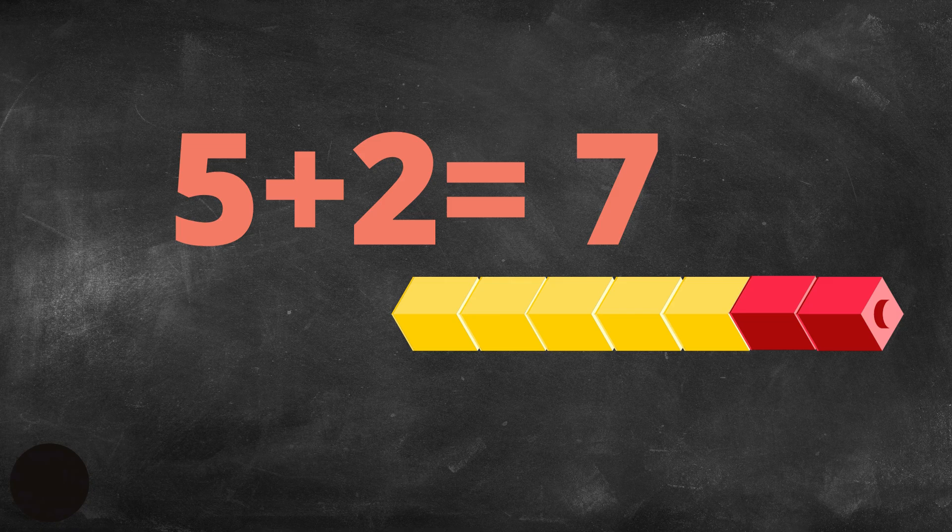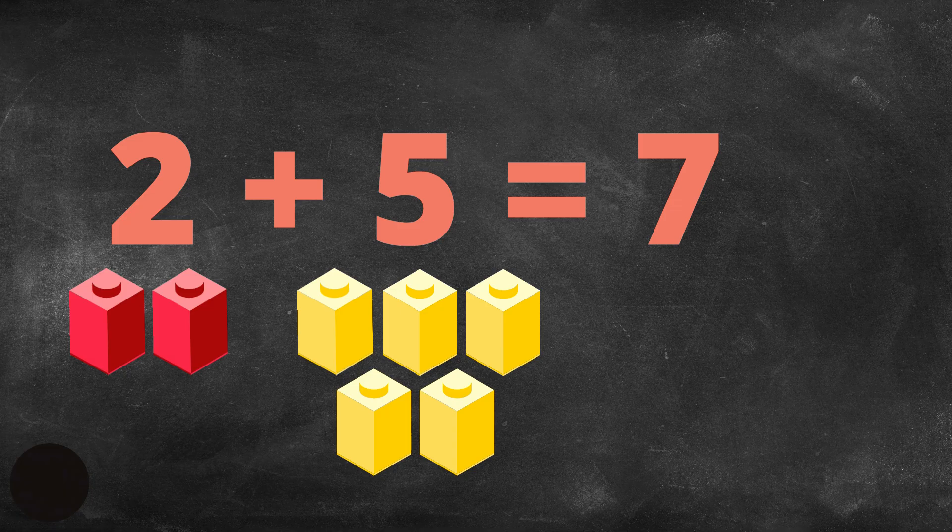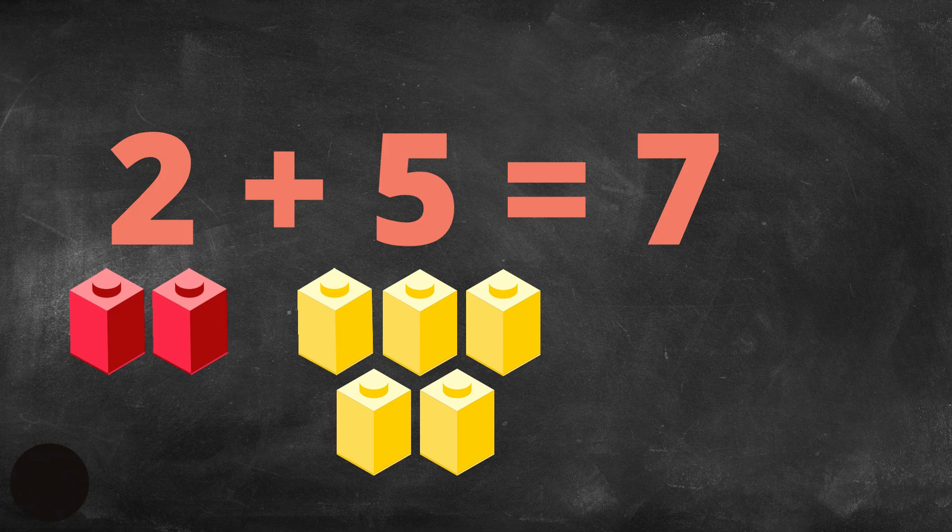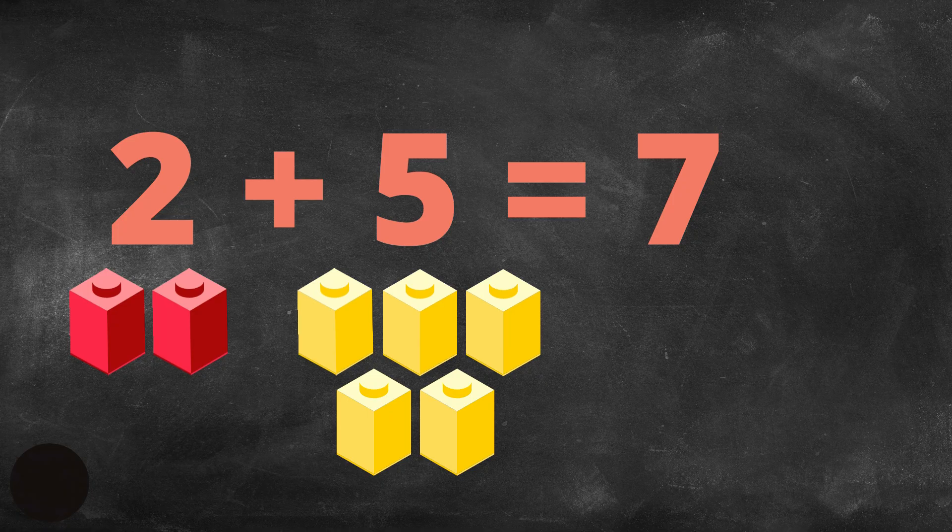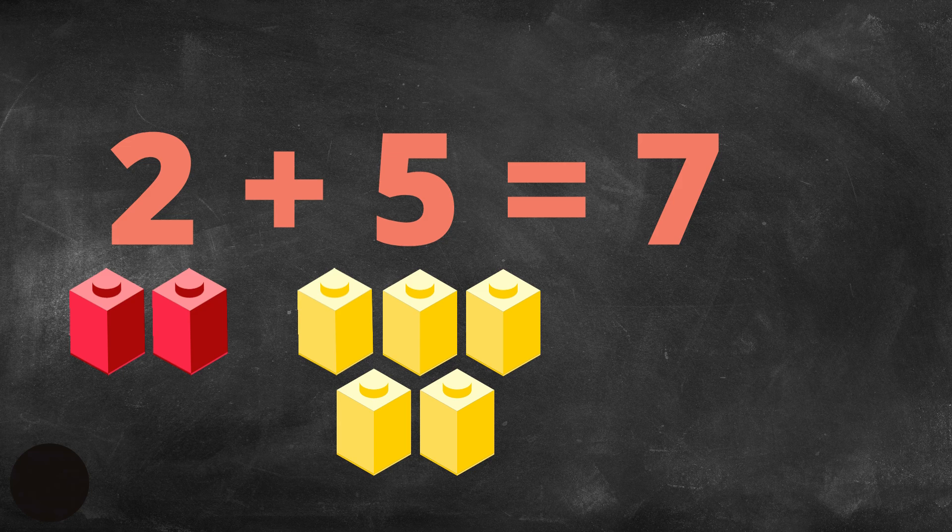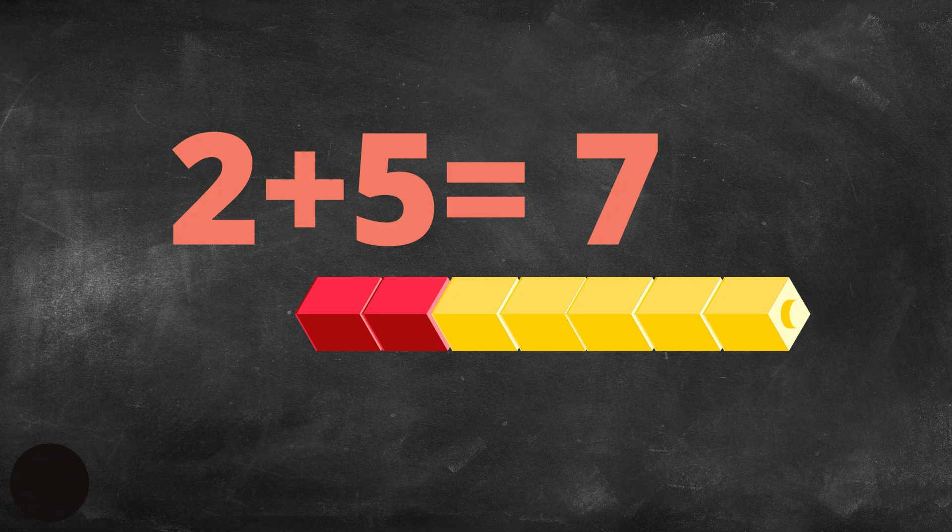Now, what happens if we change the order of the addends? So here is 2 first plus 5. Remember, we used the red cubes to represent the 2 and the yellow cubes to represent the 5. So here we have 2 red cubes plus 5 yellow cubes. Let's make a train again. This time we're going to put the 2 red cubes first and the 5 yellow cubes. And here we go, we have a sum of 7.